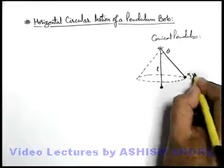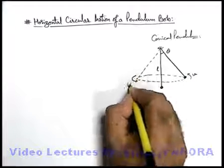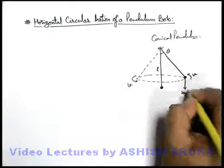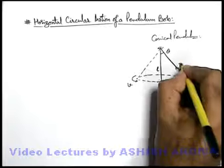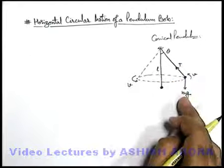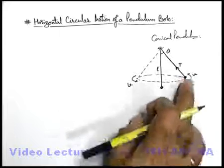Say if it is revolving with a speed v, we can simply state at a position it'll be experiencing m g in downward direction. It'll be experiencing the tension t along the length of the string. These are the only forces acting on the bob.